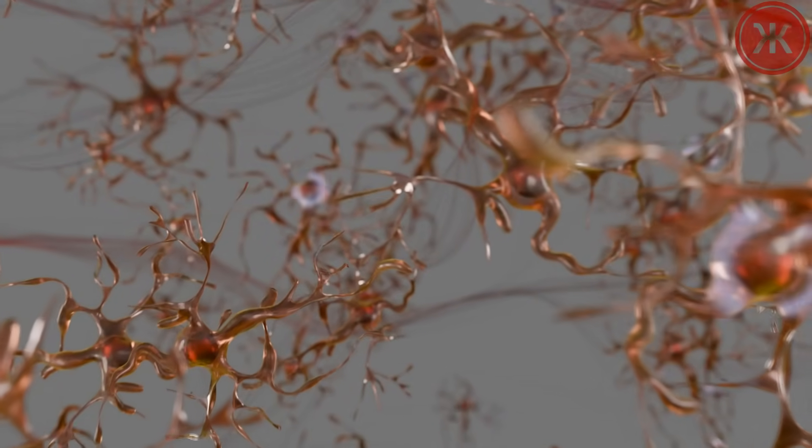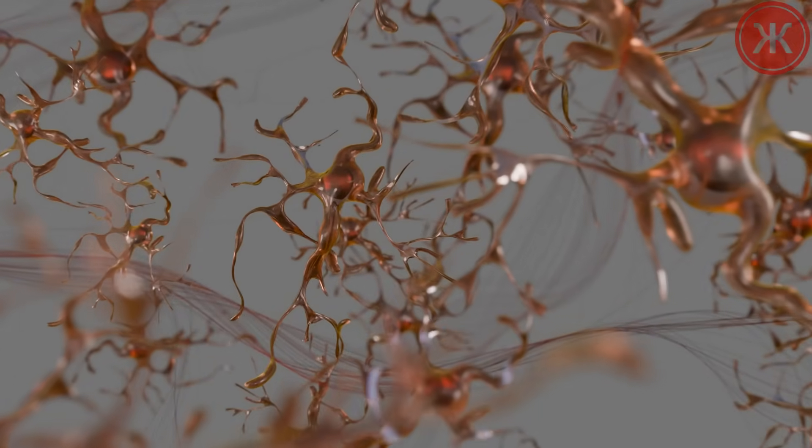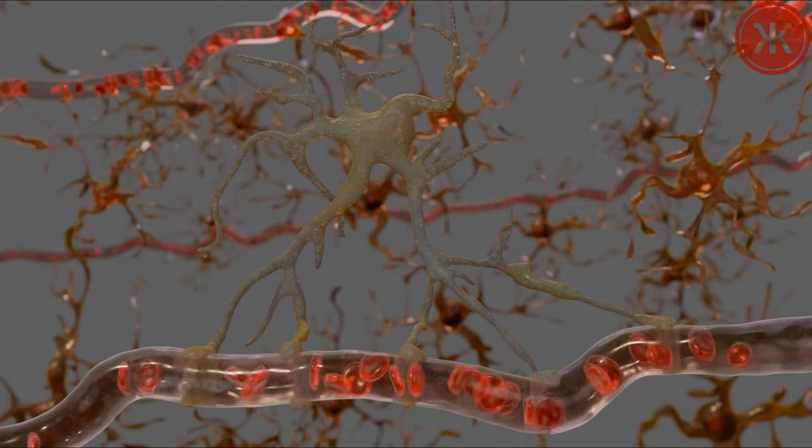If a blood vessel is dysfunctional, it can lead to a lack of blood flow in some parts of the brain. This can result in neurons becoming stressed, hibernating, or dying.